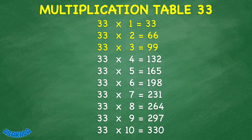33 times 4 equals 132. 33 times 5 equals 165. 33 times 6 equals 198. 33 times 7 equals 231. 33 times 8 equals 264.